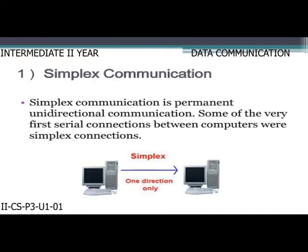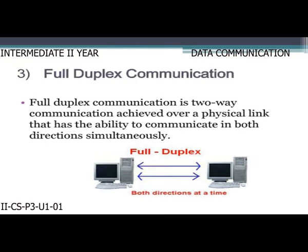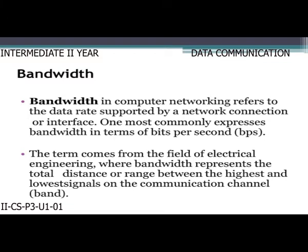Simplex communication is permanent unidirectional communication; some of the very first serial connections between computers were simplex. A half duplex link can communicate in only one direction at a time — two-way communication is possible but not simultaneously. Full duplex communication is two-way communication over a physical link that can communicate in both directions simultaneously.